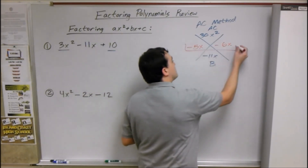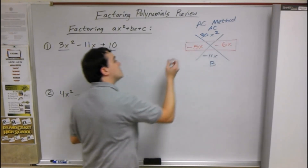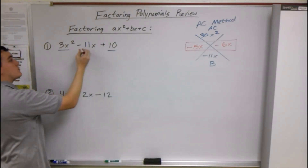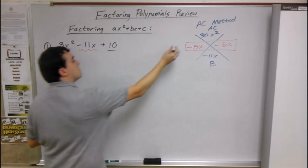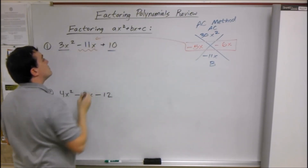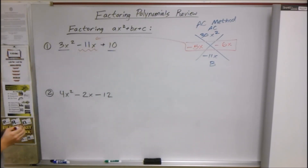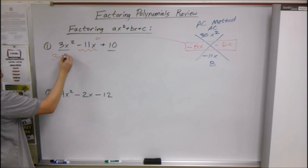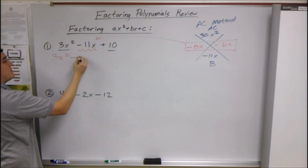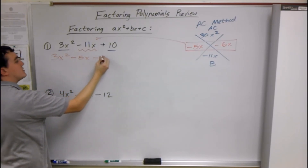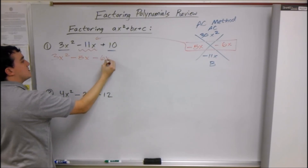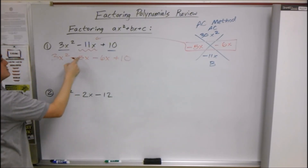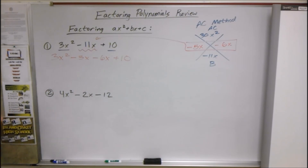So what we do with these is replace our middle term with them. They replace the -11x, so everything else stays the same: 3x² minus 5x minus 6x plus 10.